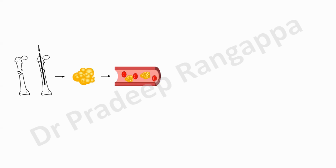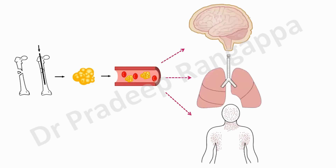So what is fat embolism? As the name suggests, whenever an individual has a long bone fracture or undergoes cosmetic surgery, fat gets dislodged from the bone marrow and enters the systemic circulation. Fat embolism syndrome predominantly manifests with three systemic presentations: skin rashes, respiratory distress, and neurological manifestations — the classic triad — all of which this patient had, including a petechial rash on the trunk.